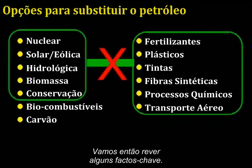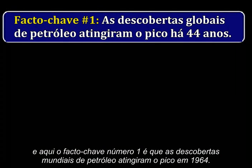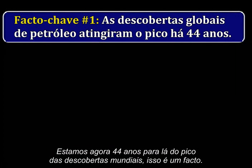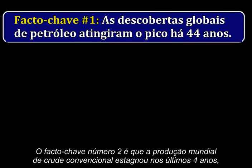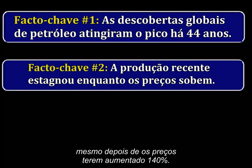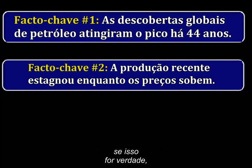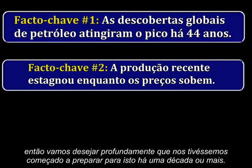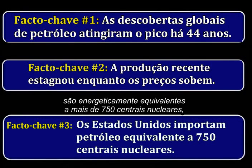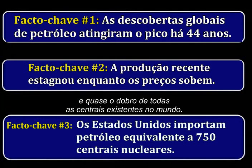Let's review a few key facts. You have to find oil before you can produce it. Key fact number one: world oil discoveries peaked in 1964. U.S. discoveries peaked in 1930, and 40 years later production peaked. We are now 44 years after the global discovery peak. Key fact number two: world production of conventional crude has been flat for the past four years, even as prices have increased by 140%. Taken together, key facts one and two suggest the possibility that peak oil is already upon us. Key fact number three: U.S. oil imports are the energy equivalent of more than 750 nuclear power plants, which is seven times as many nuclear plants as currently exist here, and nearly twice the total number of nuclear plants in the entire world.